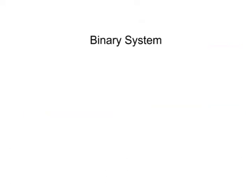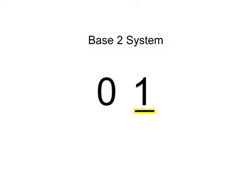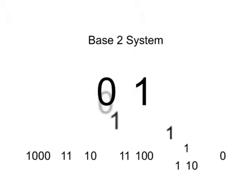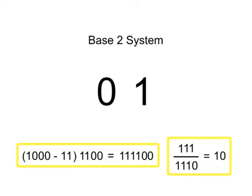The binary system also uses place value to determine the magnitude of a number, but uses only 0 and 1 as numeric symbols. Thus, it is referred to as the base 2 system with each position incremented by a multiple of 2. Digital systems use the base 2 system for computational operations in many of its applications.